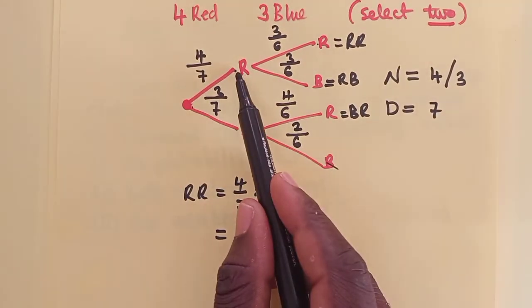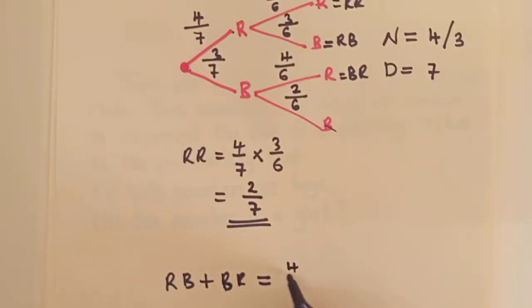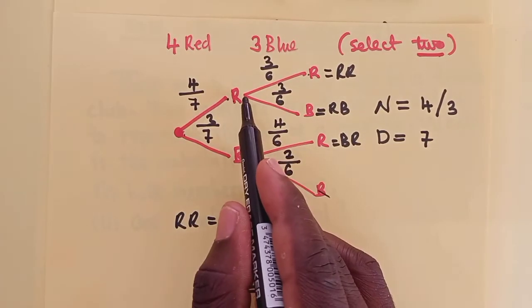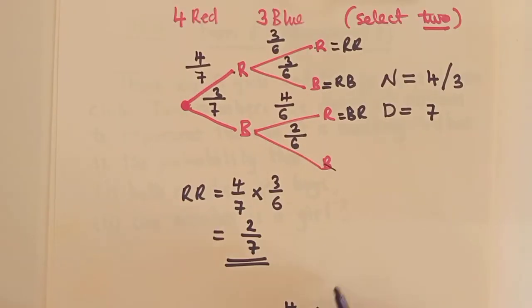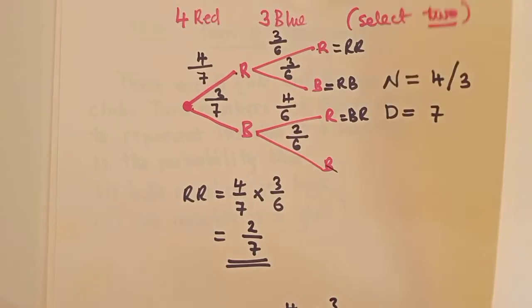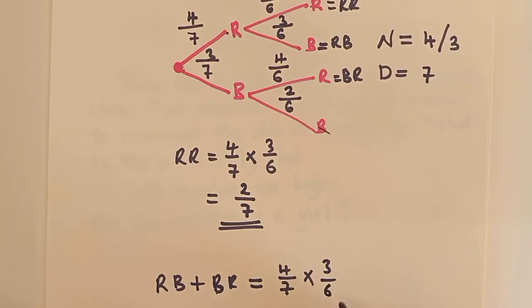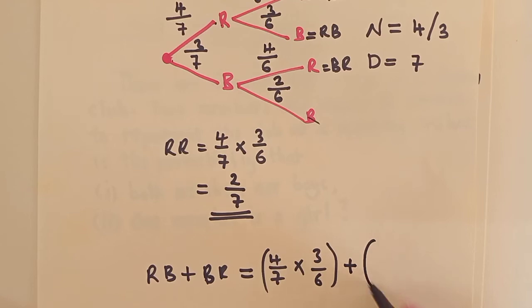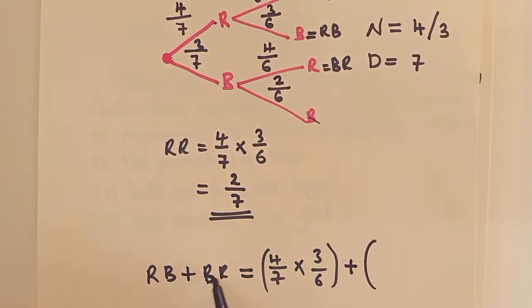Which will be equal to red, blue. So red, it is a four over seven. Times. Remember, same line. We multiply times, blue there is a three over six. So these two, three over six. And then we will say plus. Plus. This plus.